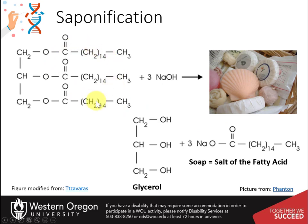Hydrolysis of TAGs with a strong base will split the TAG into glycerol and the salts of the fatty acids. The salts of the fatty acids are soaps. Thus, this process is called saponification. Saponification using potassium hydroxide instead of sodium hydroxide gives softer soaps.